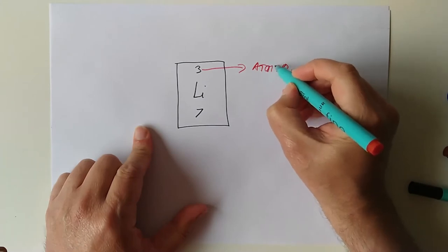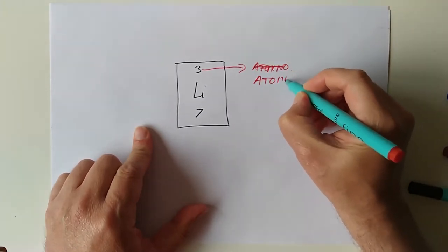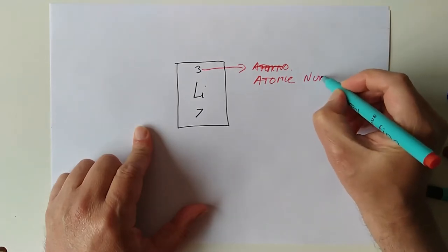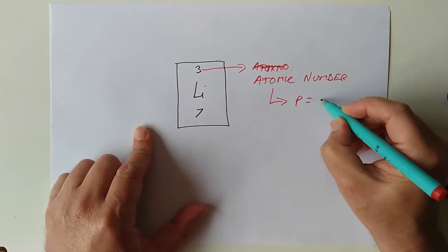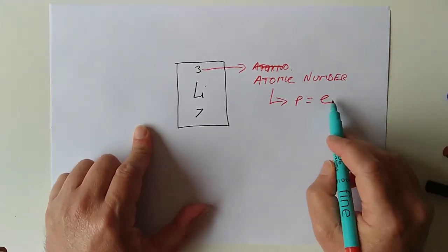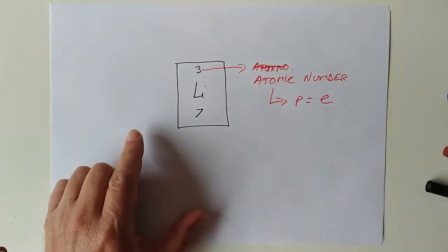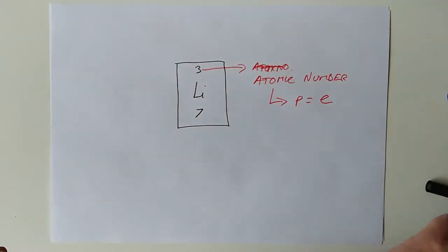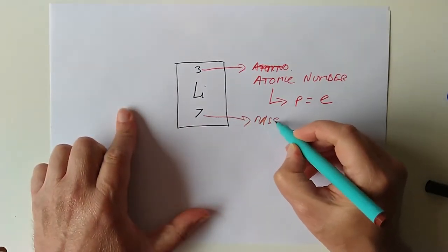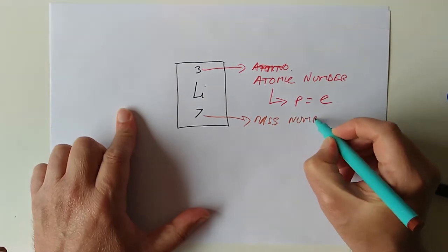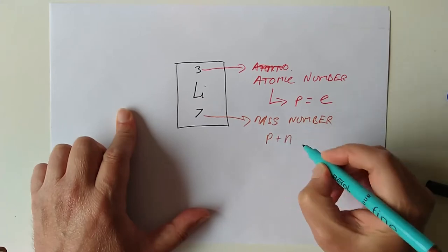Atomic number — I'll write the whole word here, don't be lazy. The atomic number tells you the protons, which are equal to the electrons, unless of course you lose or gain these — but we talked about that last time for making ions. And this number here, the mass number — the larger one — that tells you the number of protons plus the number of neutrons added together. So that's protons plus neutrons.